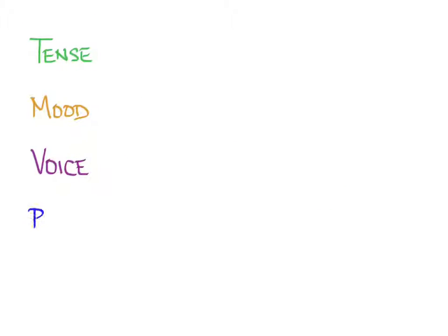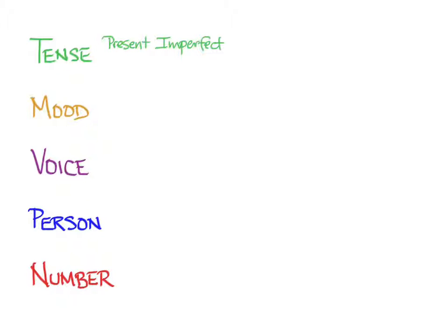When you first learned Greek verbs way back in Unit 2, we talked about how we look at five things in a verb form: tense, mood, voice, person, and number. As a review, let's look at each of those things. Greek regularly uses six tenses: present, imperfect, future, aorist, perfect, and pluperfect.